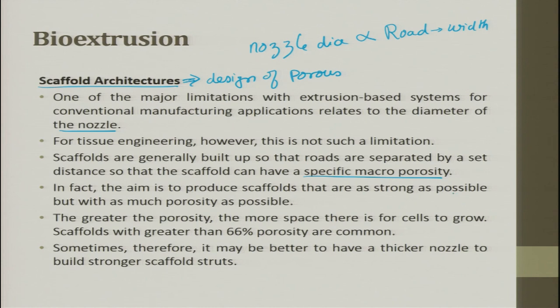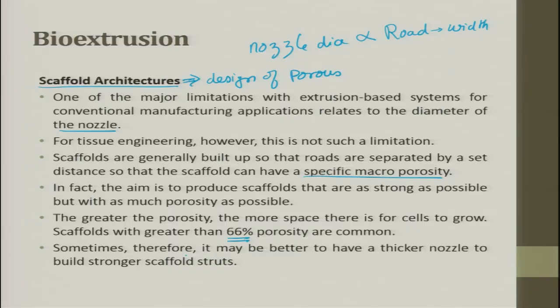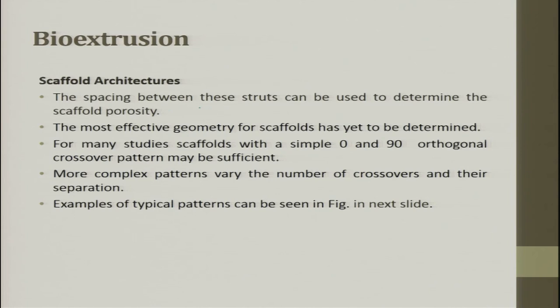The aim is to produce scaffolds that are as strong as possible, but with as much porosity as possible — the greater the porosity, the more space there is for cell growth. Scaffolds with greater than 66 percent porosity are common today. Being polymer-based with 66% porosity makes the scaffold very light, but the challenge is how to strengthen such a porous material. It may be better to use a thicker nozzle to build a stronger scaffold. Nozzle design leads to road width design, and the spacing between roads determines the scaffold porosity.